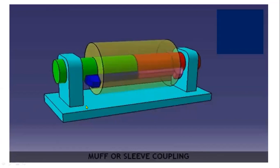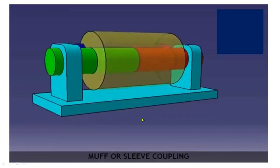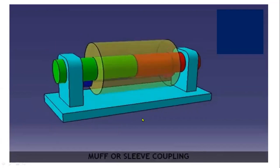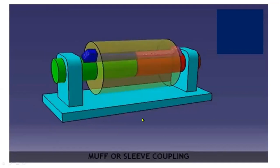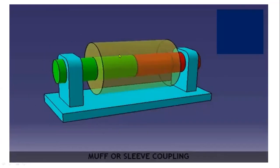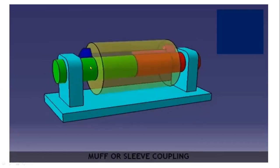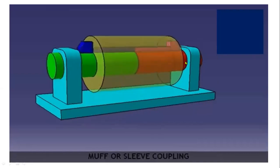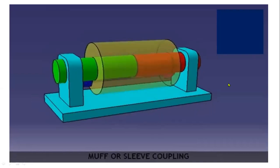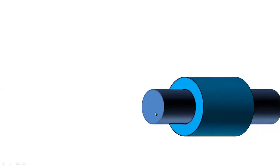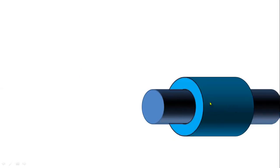You can observe an animated view of a coupling — this is a muff or sleeve coupling, a rigid type. The hollow shaft here is called a sleeve, and this one is a gib head key. The green and red colored rounded elements are the shafts — one is a solid shaft and the hollow pipe is called the sleeve or muff.